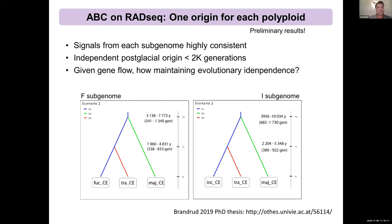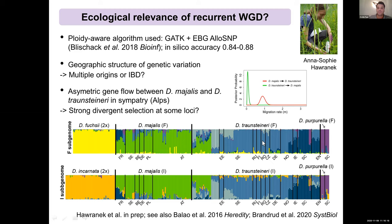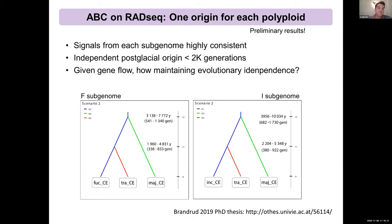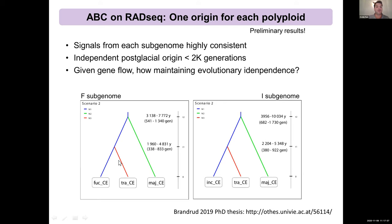To test whether the structure in Traunsteineri was due to multiple origins or isolation by distance, we used IBC modeling on this RAD sequencing data. These are preliminary results based on subgenome separation, and we will repeat this analysis with more complex tools. The signals from each subgenome are highly consistent, indicating that each polyploid — Majalis and Traunsteineri — had an independent origin, confirming our previous hypothesis: Majalis is an older polyploid, roughly 2,000 generations old, and Traunsteineri is slightly younger, roughly 1,000 generations old.